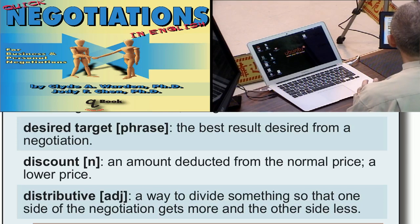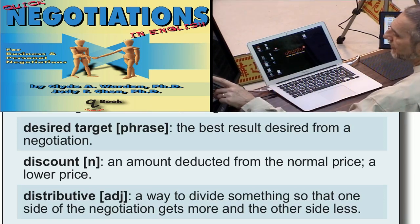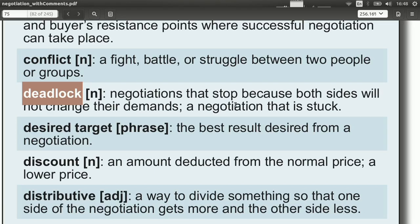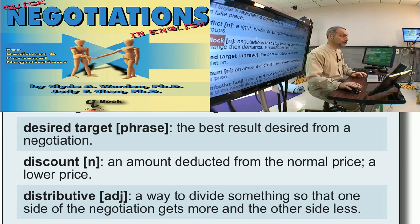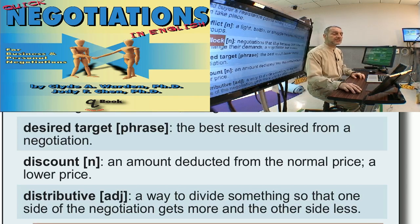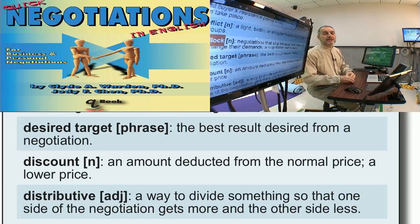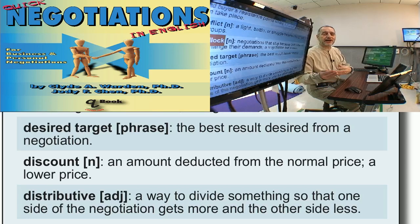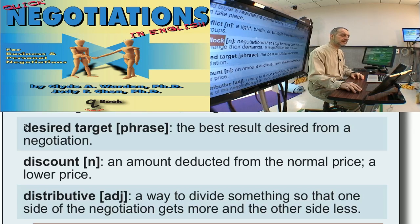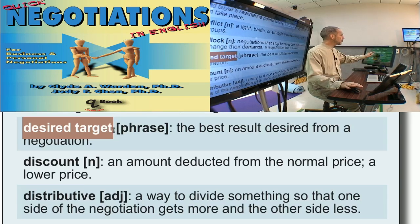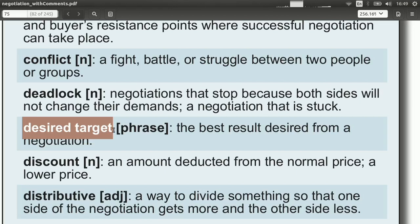Deadlock means you're stuck — you cannot move in any direction. The negotiation is deadlocked, meaning both sides are not going to change and they cannot agree, so it usually just has to come to an end. You can use this when talking to the other side: I think we're in a deadlock, or this negotiation is deadlocked, or we want to avoid deadlock — can you please give in a little bit on price? It's a perfectly fine, objective-sounding word.